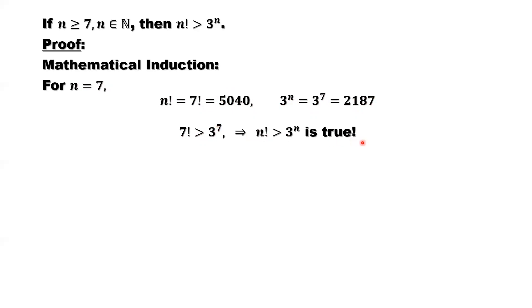This implies n factorial is bigger than 3 to the power n is true at the starting point when n equals 7. This is the first step for mathematical induction.